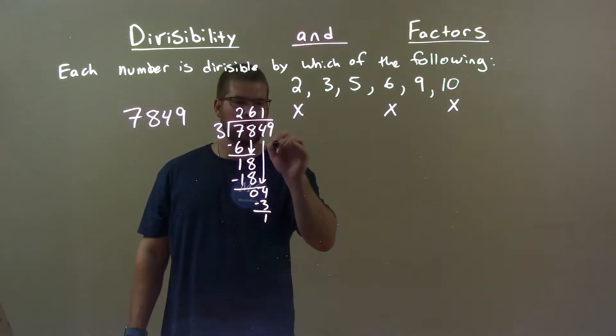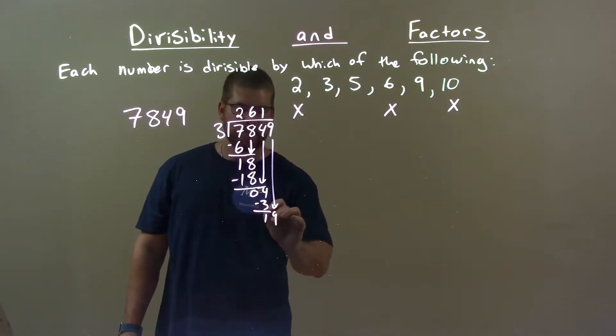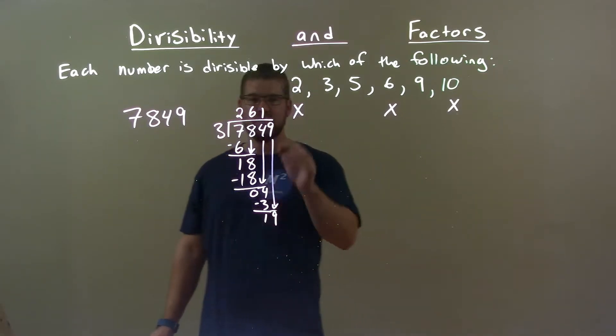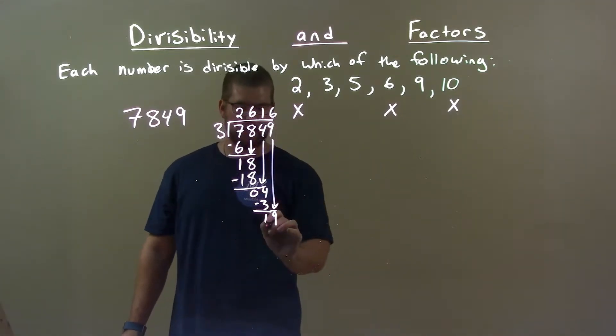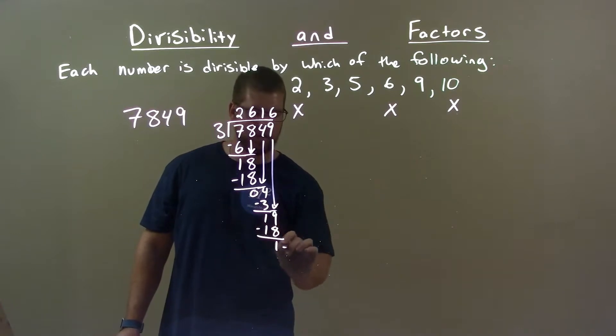Fantastic. 1 left over. Bring down a 9. Does 3 go into 19? Not evenly, but 6. 6 times 3 is 18, and we're left with a remainder of 1.